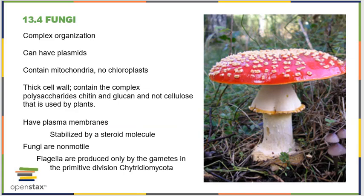Fungal cells have complex organization. Some of them have plasmids, just like the bacteria we talked about. They do contain mitochondria, but they don't have any chloroplasts. Their cell walls are pretty thick and contain complex polysaccharides, chitin, and glycan, but they don't have any cellulose, which is what we find in plants — so that helps differentiate them from plant cells. They do have normal plasma membranes, similar to what you'd expect in an animal, but stabilized more by special steroid molecules. Fungi are also not typically motile, though some groups have flagella on their gametes.